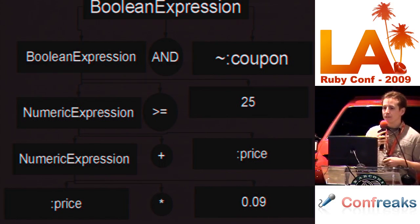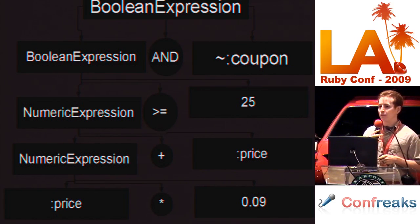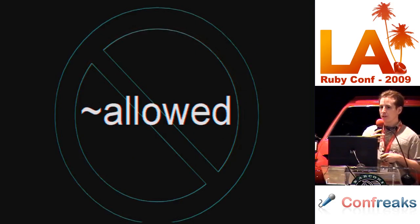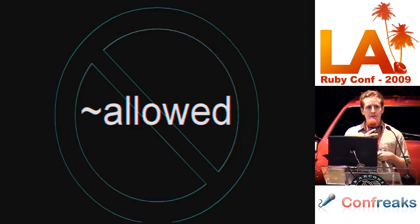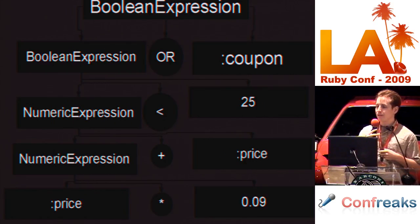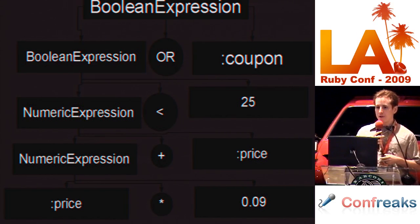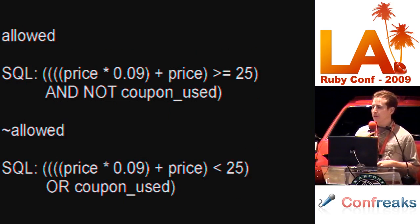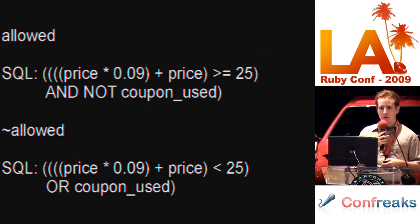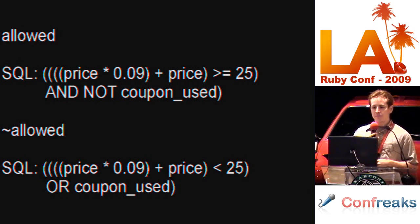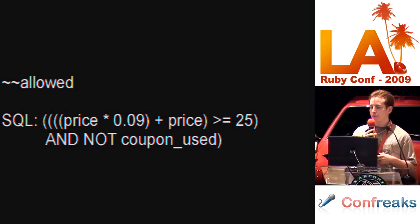Knowing about SQL at an object level instead of at a string level allows Sequel to have quite powerful introspection capabilities. One instance where Sequel manifests this knowledge is when it comes time to invert existing conditions. Other database libraries that only understand SQL at a string level would probably just stick a NOT in front of the conditions. Sequel, because it understands SQL at an object level, can actually apply the inversion operator to the abstract syntax tree based on the rules of logic — it changes AND to OR, NOT coupon to coupon, and greater-than-or-equal to less-than. The final result is cleaner SQL and easier to understand. You can also invert the object twice, which leaves you with the original SQL string.